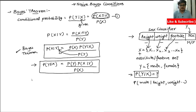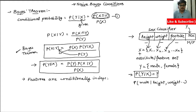One important point about the Naive Bayes classifier is that it states that the features are conditionally independent. This means that they do not depend on each other — so height, weight, and foot size are all independent features.